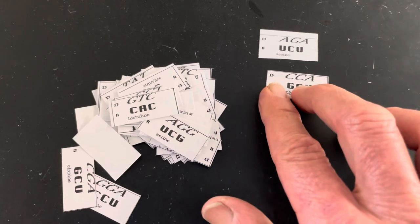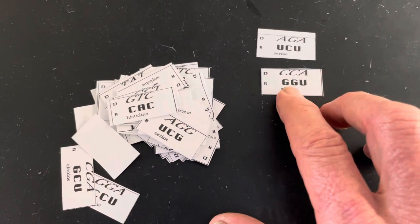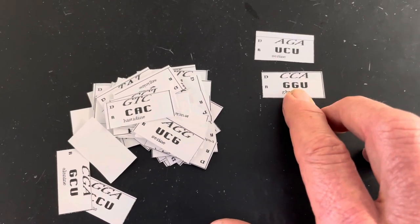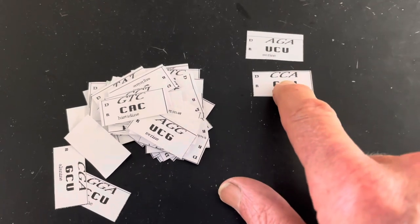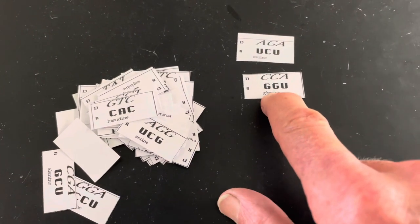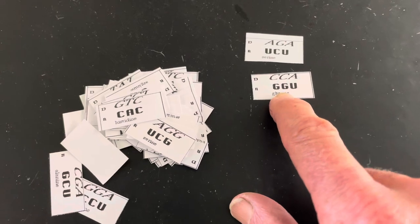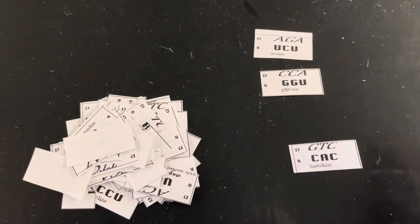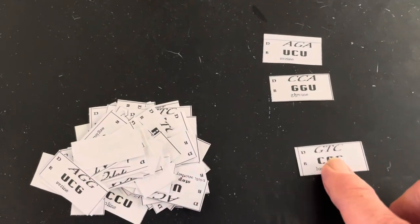This is RNA, messenger RNA. And there is what was the code on the DNA. We're going from the messenger RNA. Okay, the next one is CAC.